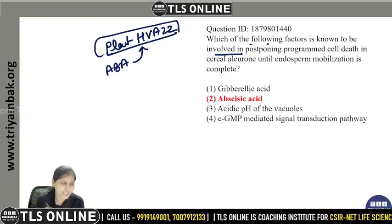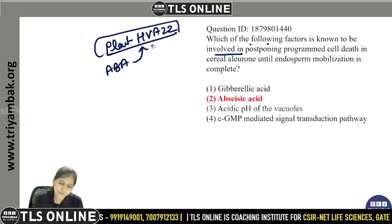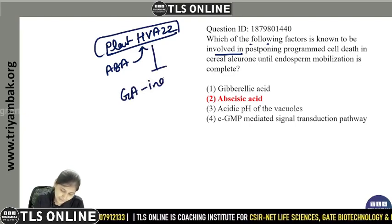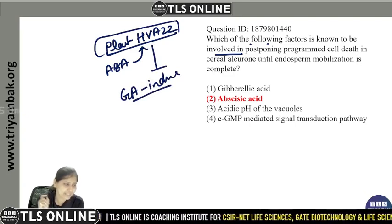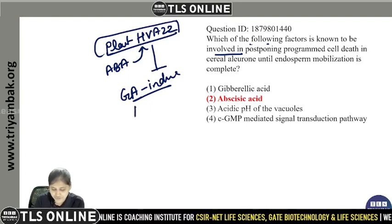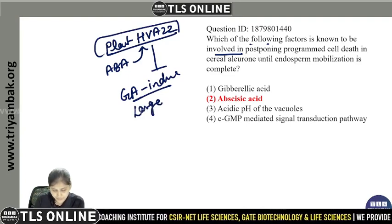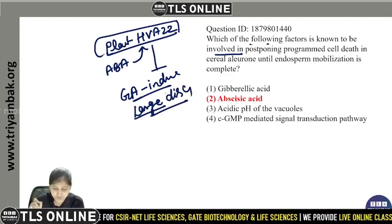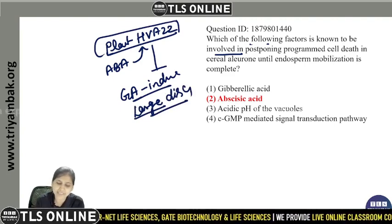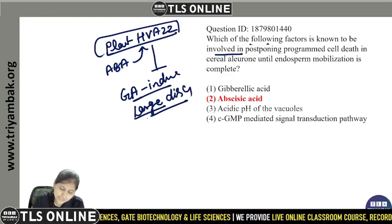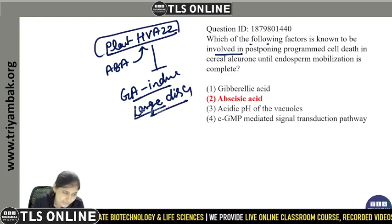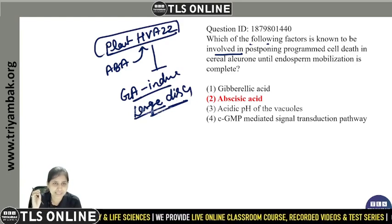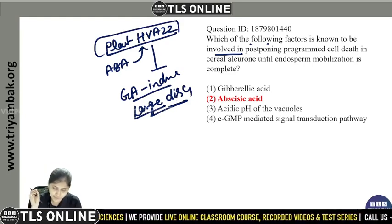What is HVA22? HVA22 inhibits GA-induced formation of large digestive vacuoles. Large digestive vacuoles are an important aspect of GA-induced programmed cell death in aleurone cells.